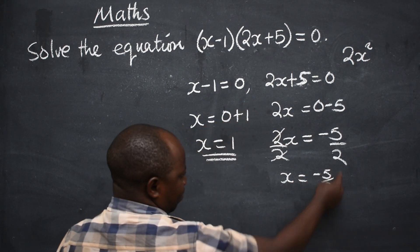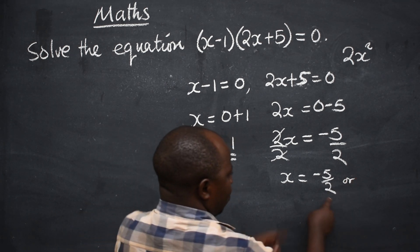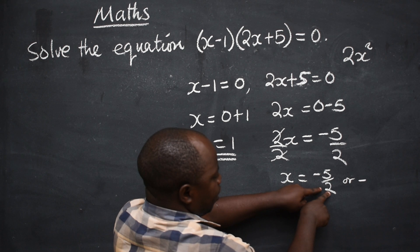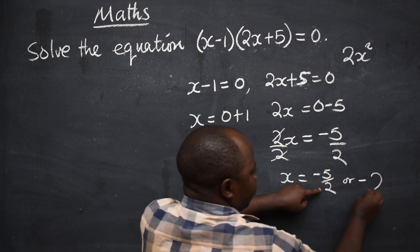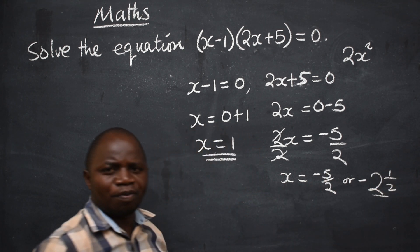Or you can write it in mixed fraction if you want. So we are saying negative. How many 2s are in 5? 2, remainder 1, over 2. So it can be like that. No problem.